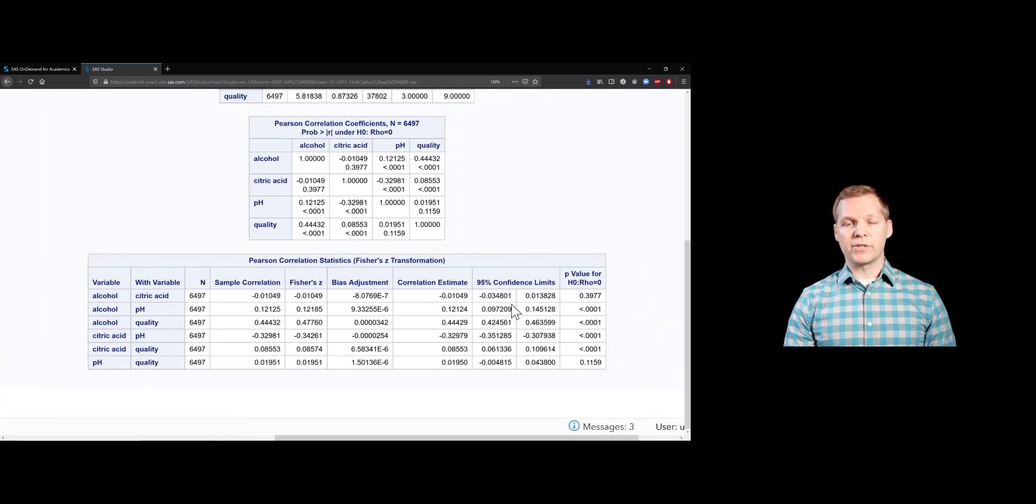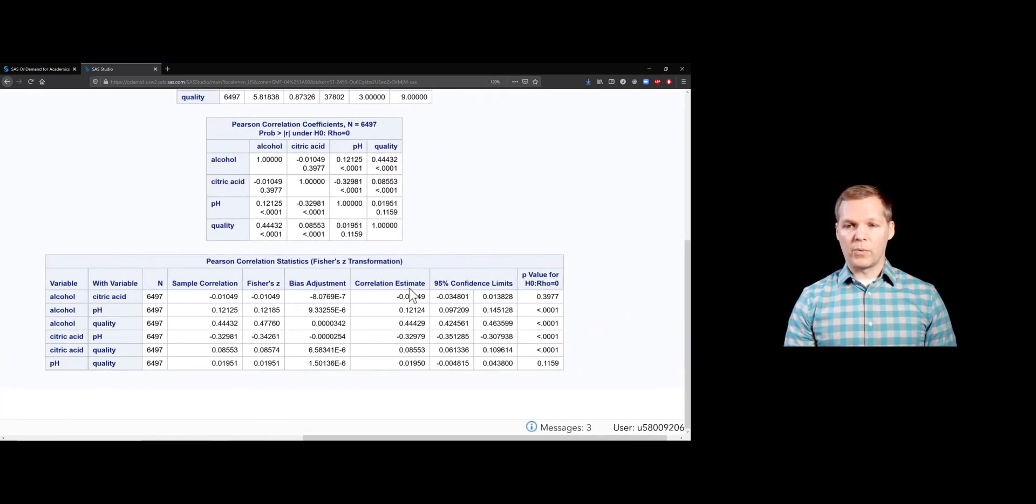Using that Fisher option on the PROC CORR statement, we get these confidence intervals, which are super useful as giving us a range of values for that population correlation. Quality is our variable of interest for the most part. So maybe we'd be more focused on these last two rows and the alcohol quality row. We're 95% confident that the population value of the correlation coefficient between alcohol and quality is between 0.42 and 0.46. So we've now gained some useful insight about this.